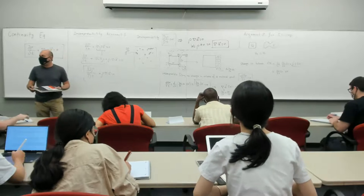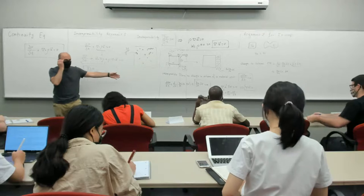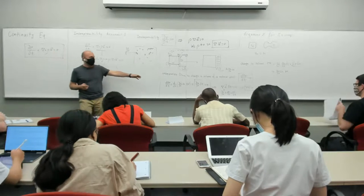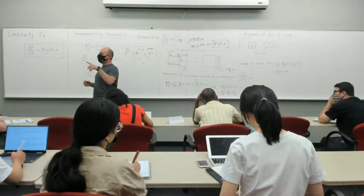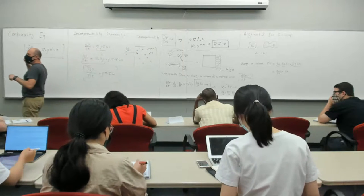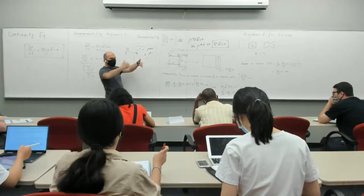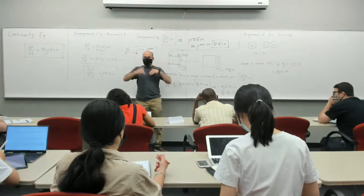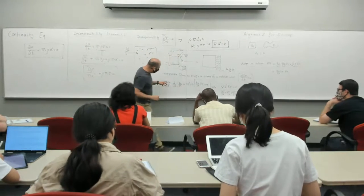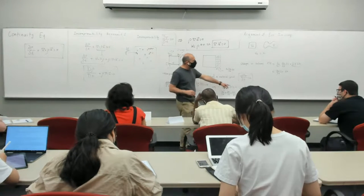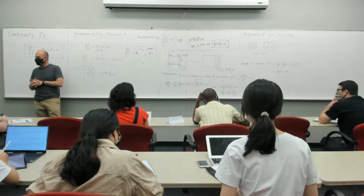If you were not convinced by the density argument, I hope this geometric volume argument is more convincing. You can find the full three-dimensional derivation in the relevant chapter from Munson, Young and Okishi on Canvas — it's easy to follow — and it shows that d(delta V)/dt = 0 necessarily implies div u = 0.